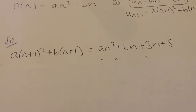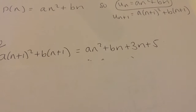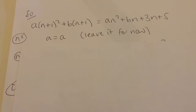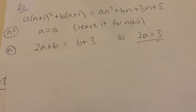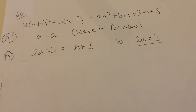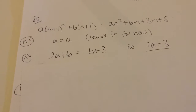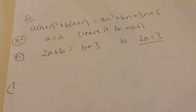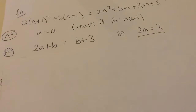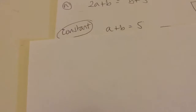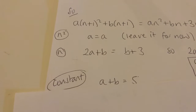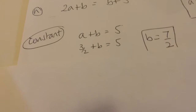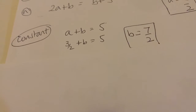I end up with a(n+1)² plus b(n+1) equals an² plus bn plus 3n plus 5. Comparing coefficients: the coefficient of n² gives a equals a — no help. Looking at the coefficient of n — expanding (n+1)² — I get 2a plus b on the left-hand side, and b plus 3 on the right-hand side. Taking b off both sides gives 2a equals 3, so a equals 3/2. For the constant term, I get a plus b equals 5. Since a is 3/2, b must be 7/2.